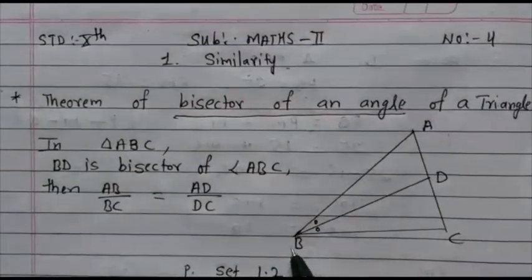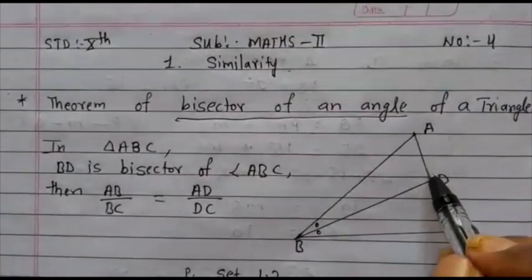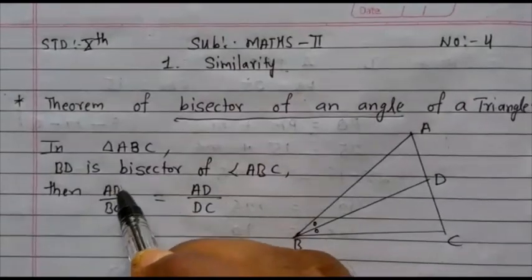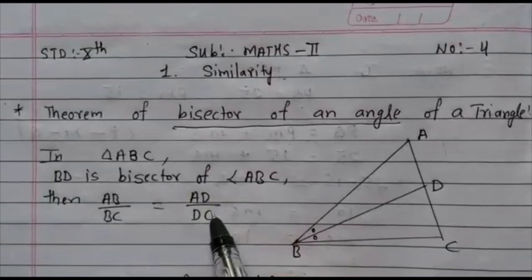What is the formula? AB upon BC is equal to AD upon DC. That means AB/BC = AD/DC.